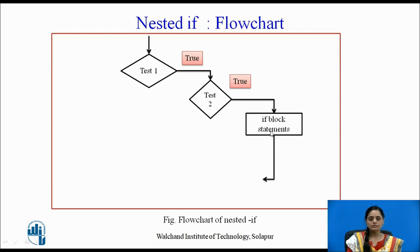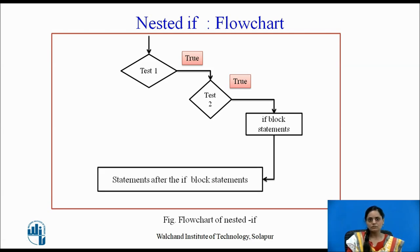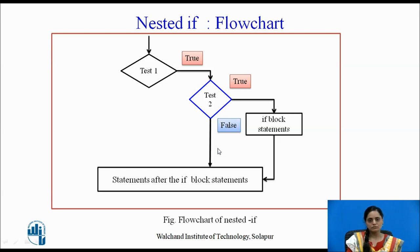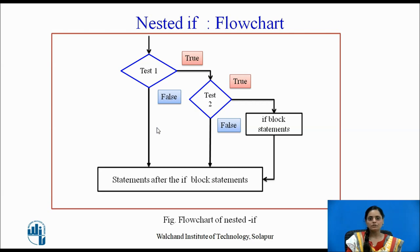After execution of these statements, the program may continue to execute statements written after the nested structure. Now if test2 happens to be false, and we have written any else block statements, those will be executed. Otherwise, the program will directly continue to execute statements just below the nested structure. Similarly, if test1 happens to be false, all of these statements will be skipped, and the program will directly continue to execute statements after the nested if-else structure.